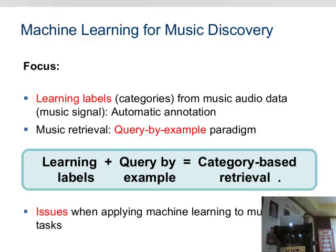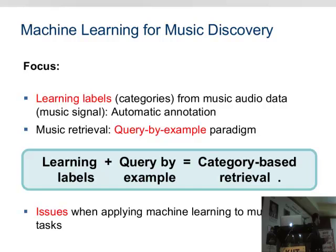This talk is titled Machine Learning for Music Discovery, and it has two or three focuses. The main focus is trying to learn labels from audio data — going beyond the signal processing part and trying to bridge the semantic gap. So, trying to learn some semantics about a given signal. This is called music automatic annotation, and basically we learn labels or categories from a music signal.